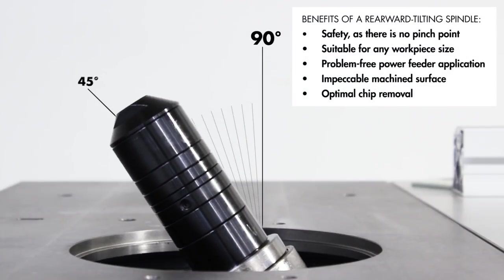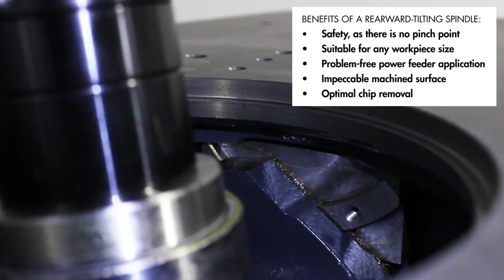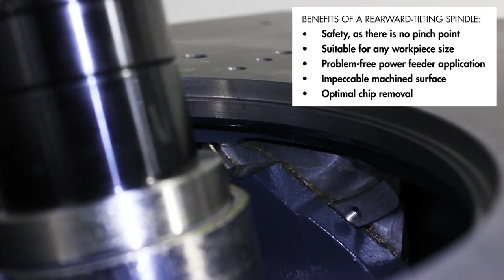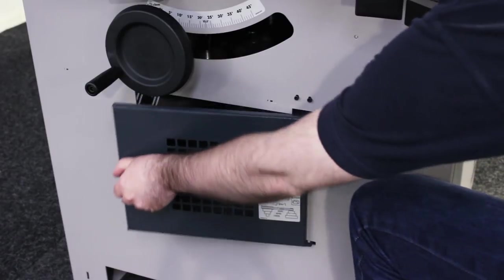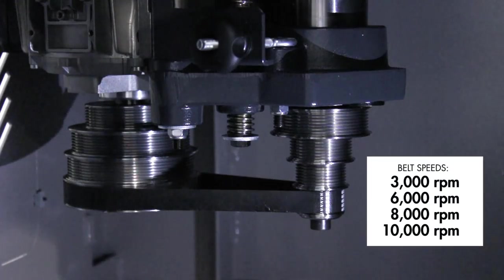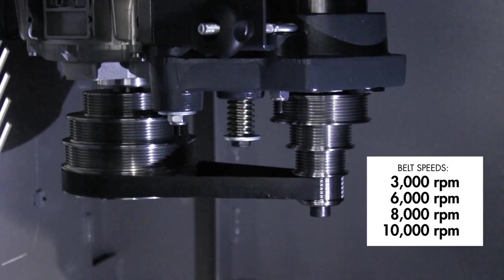The belt speed can be adjusted via the hatch in the side of the machine to change between four different speeds from 3,000 to 10,000 rpm.